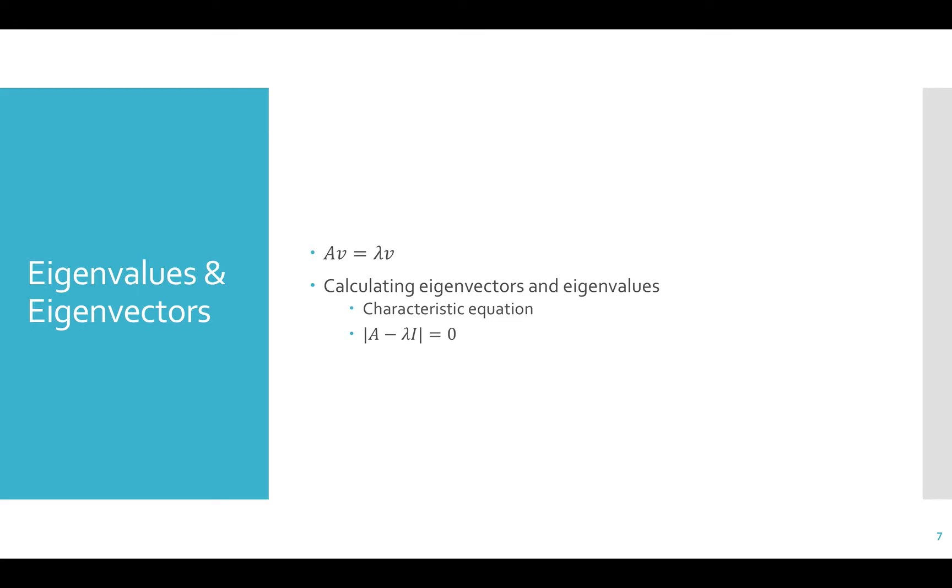Using the so-called characteristic equation, we take A, subtract lambda times I, and then take the determinant of that. Set it equal to zero and solve for the eigenvalues. Remember, I is just the identity matrix. Once we have the eigenvalues, we can find the eigenvectors quite easily.